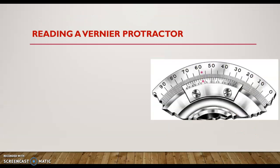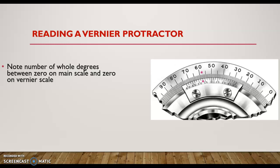Here we discuss how to read a vernier bevel protractor. The picture shows the reading condition of the main scale and vernier scale during an angular measurement. The first step is to find the main scale reading: note the number of whole degrees between the 0 on the main scale and the 0 on the vernier scale. Here, 50 degrees is the main scale reading.